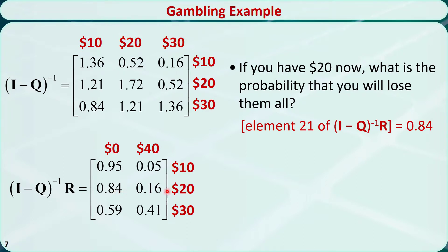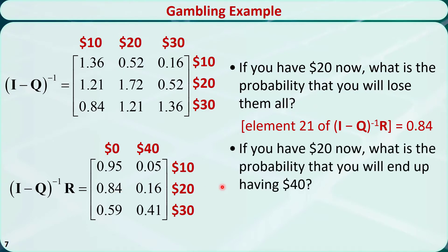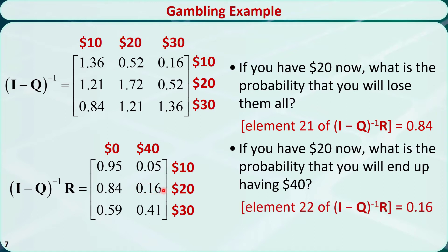If you have $20 now, what is the probability that you will end up having $40? That means you will be absorbed by the state $40. The answer is element 2,2 of the fundamental matrix times R. It is 16%.